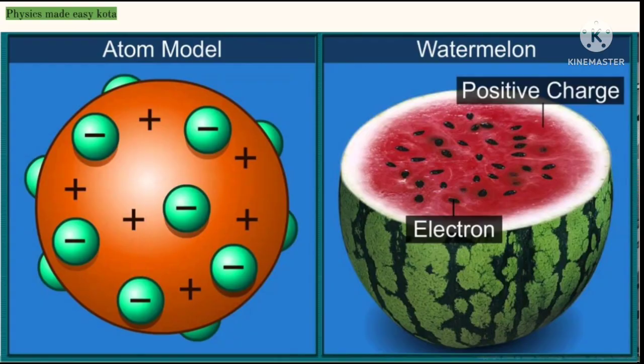Watermelon is a fruit that all we like to eat. Thomson compared the model of atom with the watermelon. He also compared his model with the plum pudding.